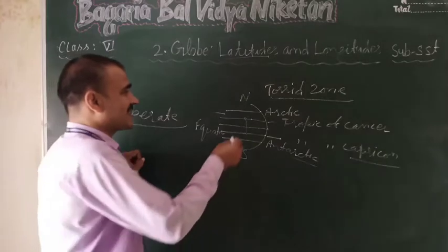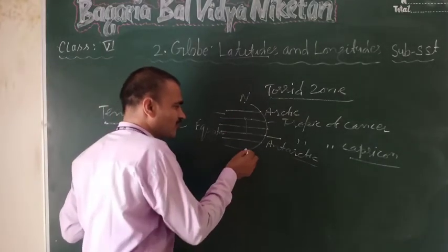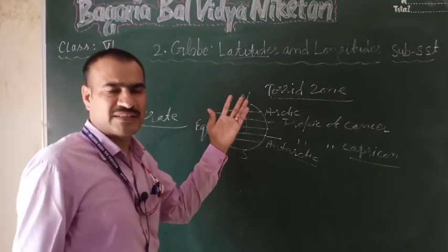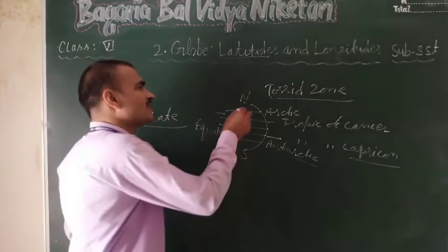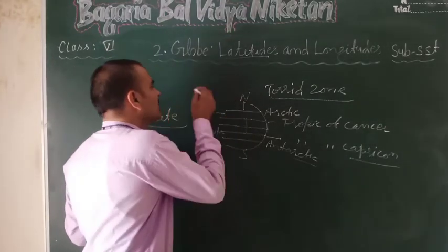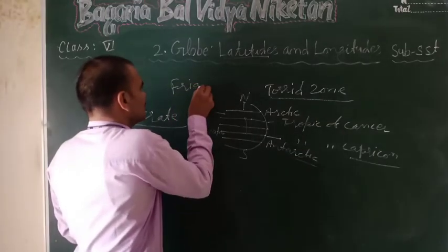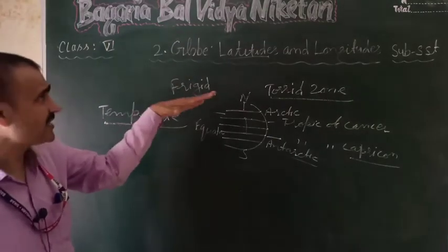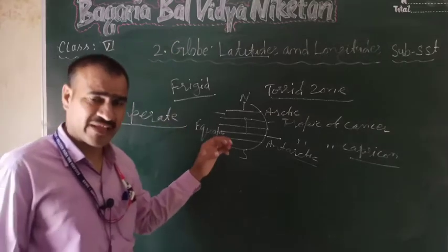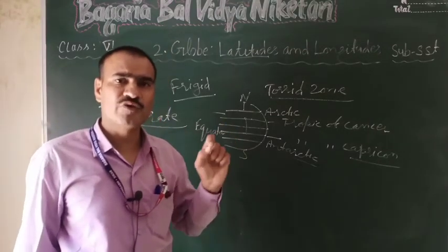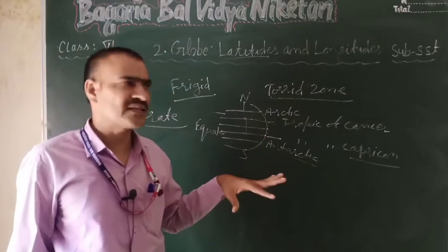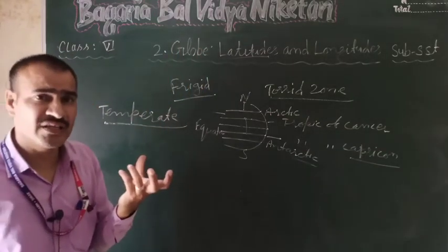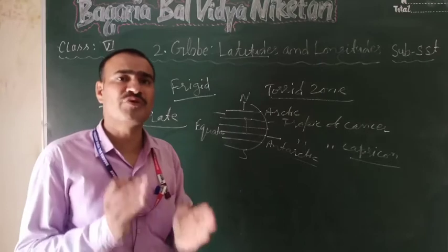अगर आर्कटिक सर्कल, नॉर्थ पोल और साउथ पोल की बात करें तो यहाँ सूर्य की रोशनी बहुत कम पहुँचती है, जिसे चाहते बर्फ जमी रहती है। इसलिए हम इसको फ्रिजिड ज़ोन बोलते हैं। आज हमने पिछले और आज के पाठ को कवर किया — पृथ्वी पर कितनी गर्मी होगी।